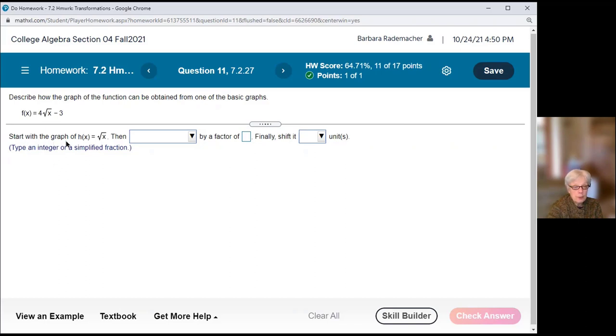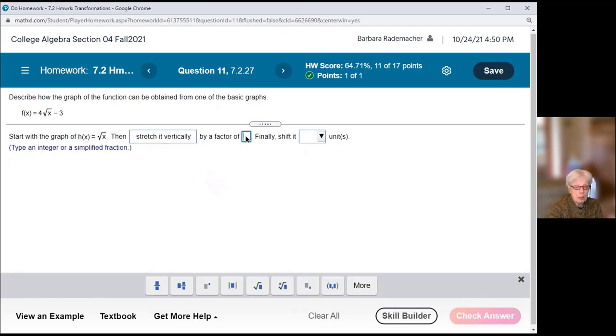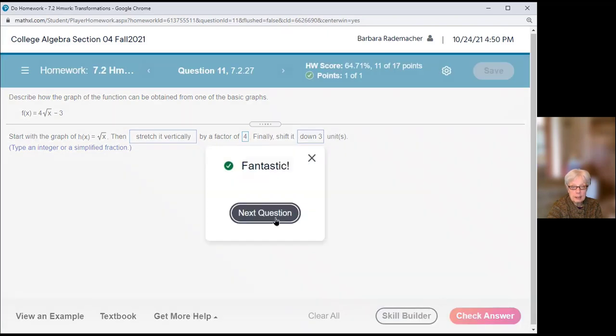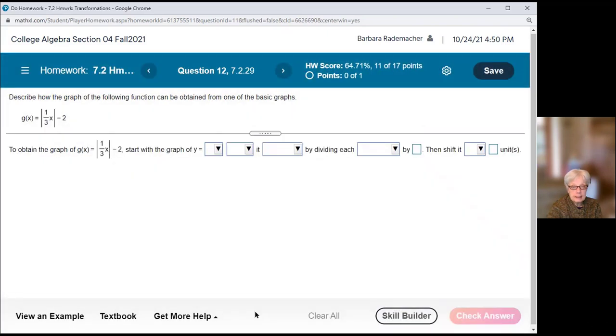So start the graph with h of x equals the square root of x. Then stretch it vertically by a factor of 4. Finally, shift it down 3 units. Check. Got it.